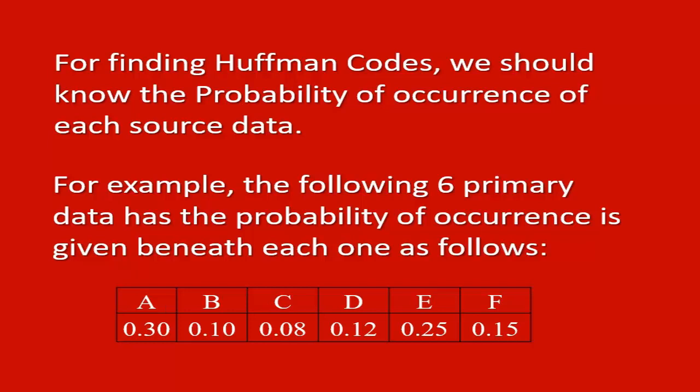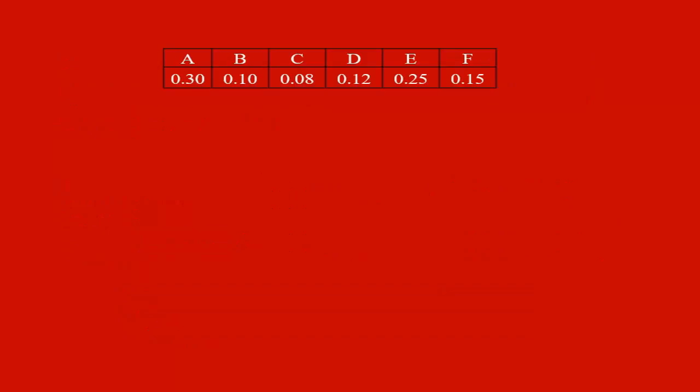As a part of the method, we place source data in first column in the descending order of their probability of occurrence. That is, the data having highest probability is placed at the top. The last is the one having least probability of occurrence.